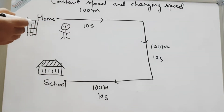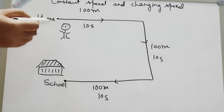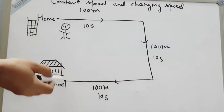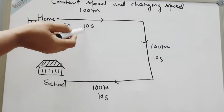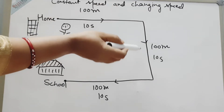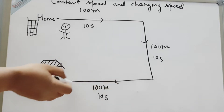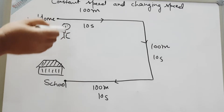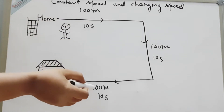This is one example for constant speed. Suppose Sam has to go to school and he starts from his home and reaches school. In the first section, he covers 100 meters in 10 seconds. In the second section, he covers 100 meters in 10 seconds. And in the third section also, 100 meters in 10 seconds. Now we will see what Sam's speed is in each section of his journey.